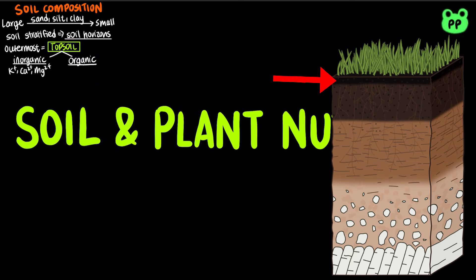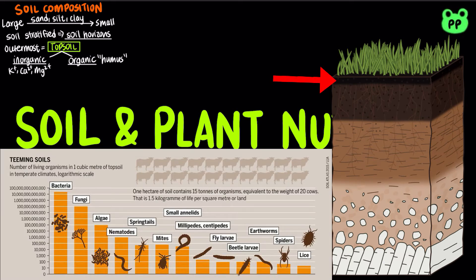The organic component is known as humus, which consists of living organisms including bacteria, fungi, algae, and other protists, insects, earthworms, nematodes, and plant roots. These organisms help to decompose organic material and mix the soil.